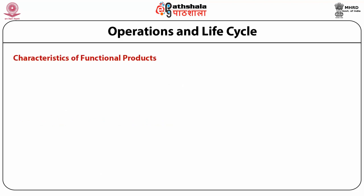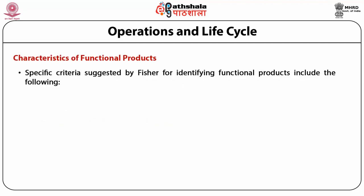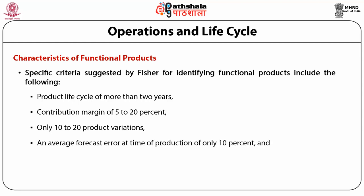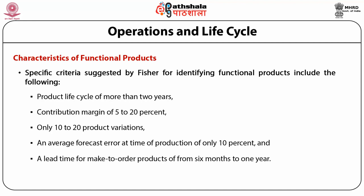Let us explore the characteristics of functional products. Specific criteria suggested by Fisher for identifying functional products include: the product life cycle will be more than two years; their contribution margin is 5 to 20 percent; only 10 to 20 product variations exist; an average forecast error at time of production of only 10 percent — which is the absolute upper ceiling of the forecast error; and the lead time for make-to-order products is from six months to one year.